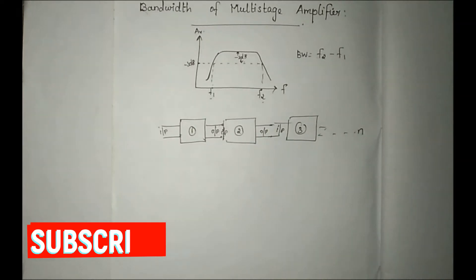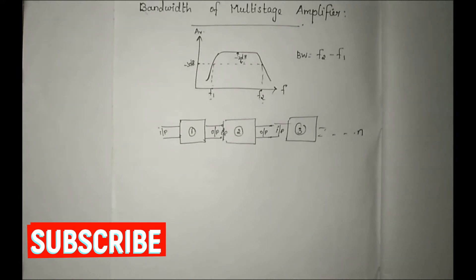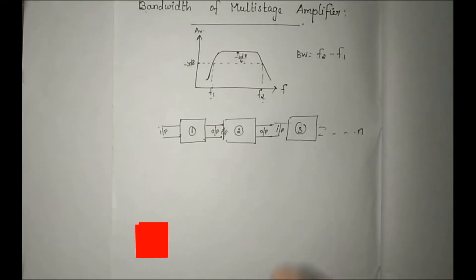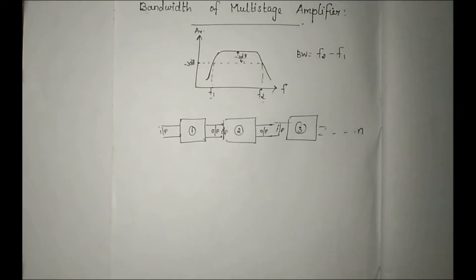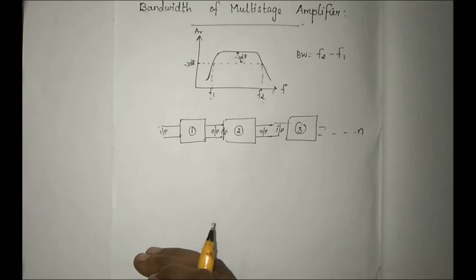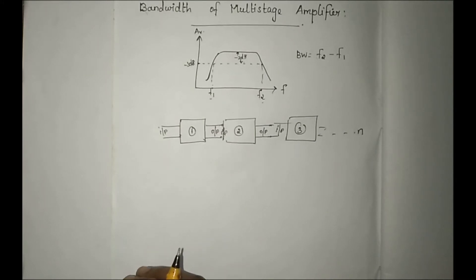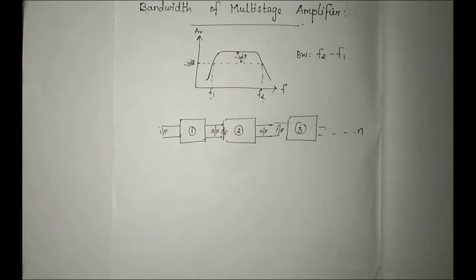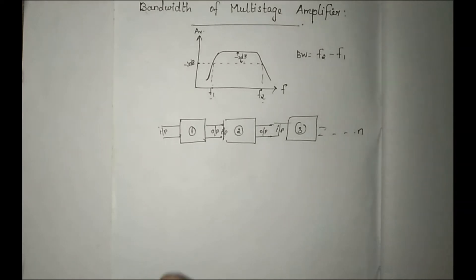On the other side, the bandwidth is reduced as stages are added. You also have to consider increasing the dual stage. When using the same circuit with more stages, the bandwidth input changes — the bandwidth can be affected by increasing the number of stages.